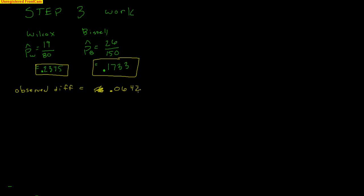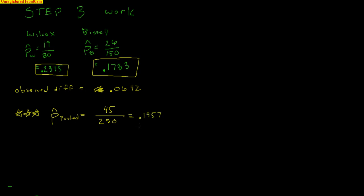Now I need the standard error, and this is where pooling comes in. Since I'm assuming there's no difference, why look at the two schools separately? I'll compute p-hat pooled: 19 + 26 = 45 total students who don't eat breakfast out of 80 + 150 = 230 total students. So p-hat pooled = 45/230 = 0.1957. This is our pooled proportion — putting all the kids together because the null says it doesn't matter what school you attend.